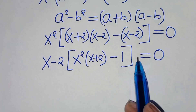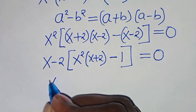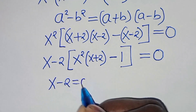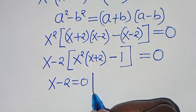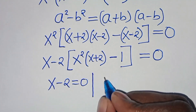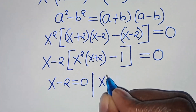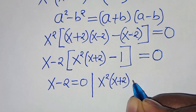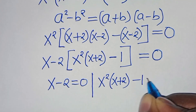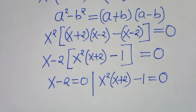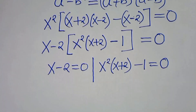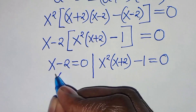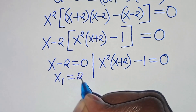The next step: x minus 2 and x minus 2 are common, so we can factor out x minus 2, so that in the parentheses we have x squared multiplied by x plus 2, close the brackets, subtract 1, close the brackets, this is equal to 0. From here we have two parts: the first part is x minus 2 equals 0, and the second part is x squared times x plus 2, subtract 1, equals 0. From the first part, x₁ is equal to 2.